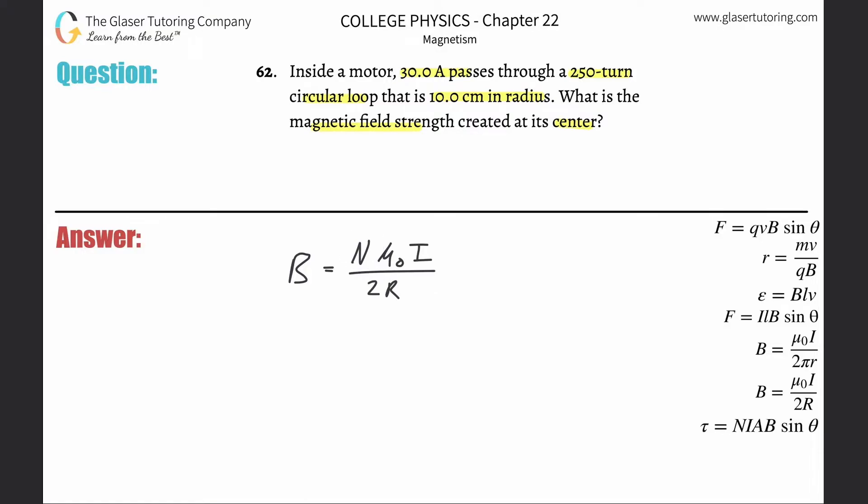If you had a loop with only one turn, that would just be a simple circular loop, right? N is the number of loops. If N is one, this thing just goes bye-bye, and here's your formula that you've been working with. But I would add the N in there so that in case you're dealing with something with more than one turn, you're not confused. That would probably be a better formula to know.